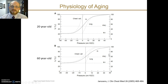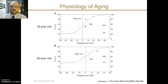This graph shows a difference between a 20-year-old and a 60-year-old individual. You can see the recoil pressure generated by the chest wall at FRC following a certain pressure-volume slope, and the inward recoil of the lung at the same FRC level. These two forces are balanced, so the total respiratory system pressure is at rest at zero.